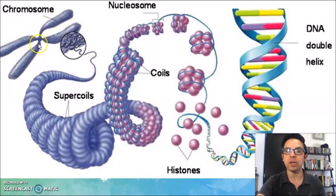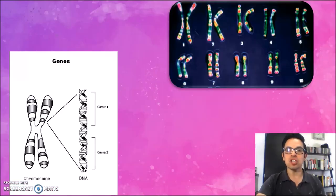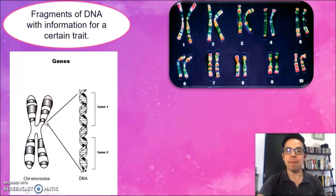Chromosomes are very important when the cell wants to divide because it's the easiest way to move the genetic information from one cell to the other. DNA will have functional fragments with specific information that we call genes. In this image, the genes will be the darkened bands that we have in the chromosome, so we can imagine them as functional fragments with information for specific traits.